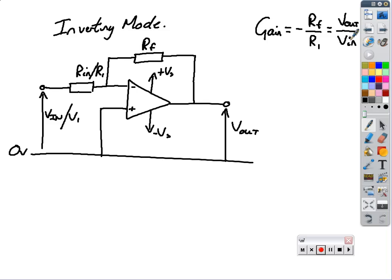The formula you get in the exam for an operational amplifier is V out over V in, or V1, sorry, this is what you get in the exam, equals negative RF over R1.